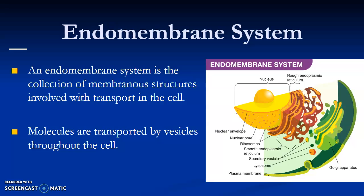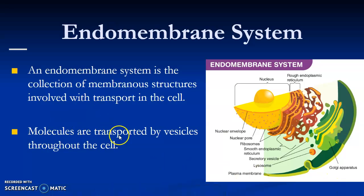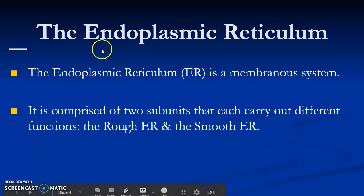The membranous structures are the different organelles that help take a vesicle and transport it inside or outside the cell membrane. The molecules are transported by vesicles. The endoplasmic reticulum, also known as the ER, is a membranous system.